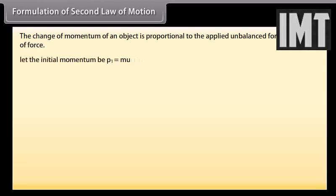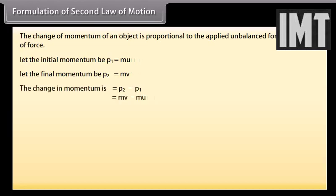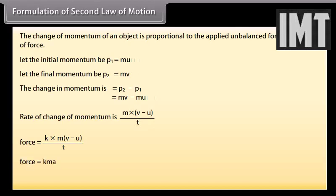Let the initial momentum be P1 which equals M U. Let the final momentum be P2 which equals M V. The change in momentum is P2 minus P1 which equals M V minus M U. Rate of change of momentum is M into V minus U whole upon T. Force is equal to K times M into V minus U upon T, where K is the proportionality constant.